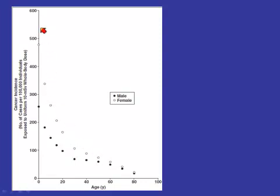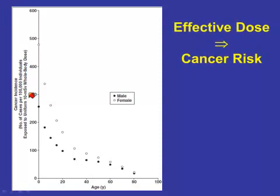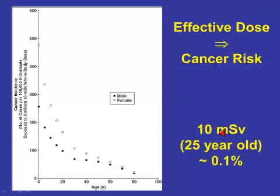If you take effective doses and ask how they relate to radiation risk — expressed as cancer incidence per hundred thousand individuals — a 10 millisievert effective dose to a 25-year-old corresponds to a risk of something like 0.1 percent, or one in a thousand. I would urge radiologists to remember this one risk value: it's very simple, very straightforward, and at the very least gives you some idea of what the risk might be.